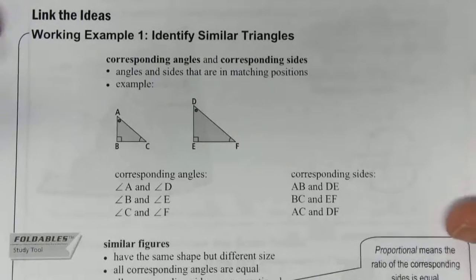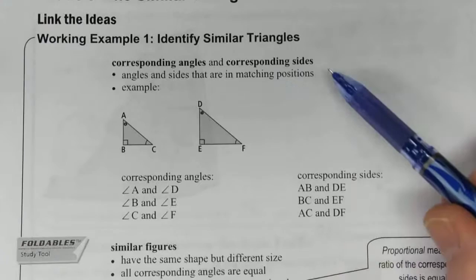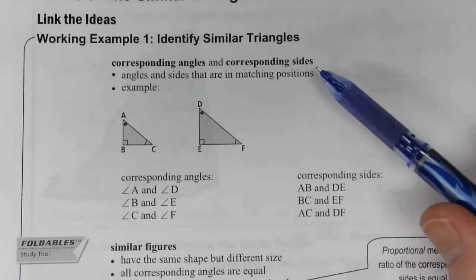4.3 is dealing with similar triangles and we're going to start by learning to identify similar triangles. Corresponding angles and corresponding sides are two of the main characteristics of triangles that we need to deal with when dealing with similar triangles.